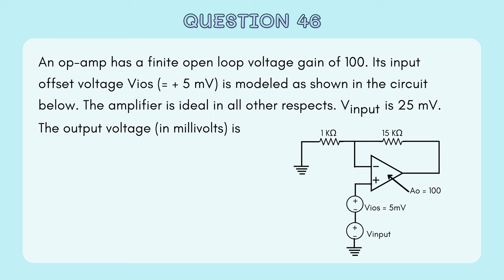An op-amp has a finite open-loop voltage gain of 100. Its input offset voltage is equal to 5 millivolts, modeled as shown in the circuit. The amplifier is ideal in all other respects. V-input is 25 millivolts. From the diagram, the inverting terminal configuration shows feedback resistance of 15 kΩ and input resistance of 1 kΩ. The output voltage in millivolts is asked.